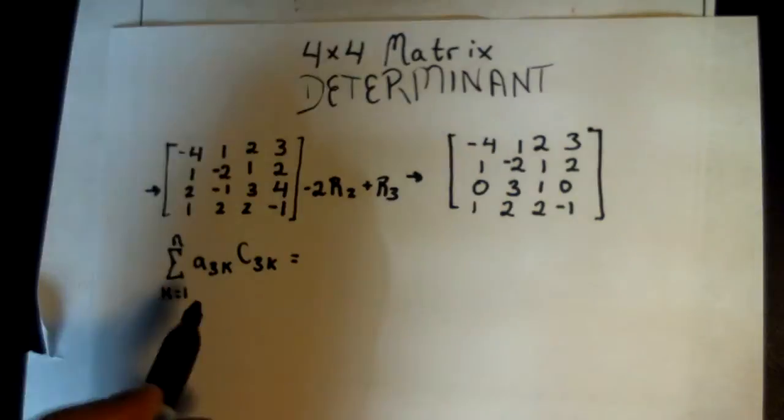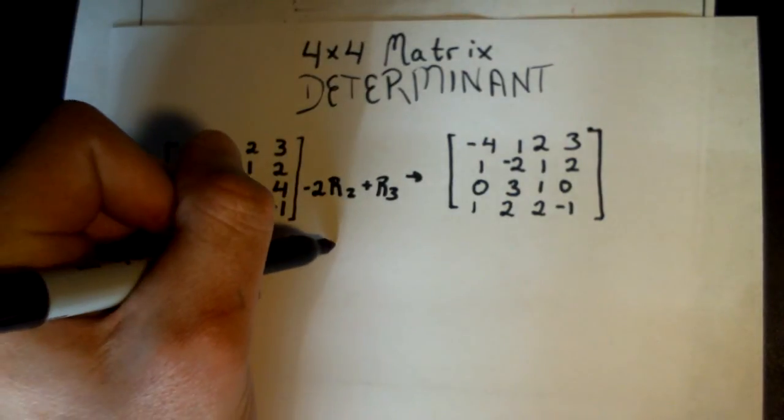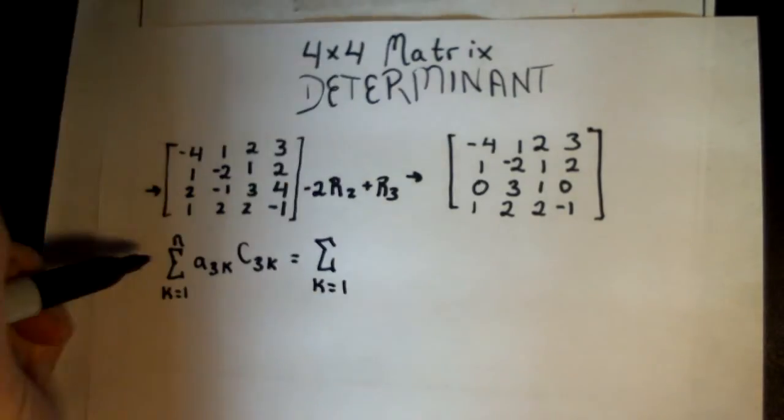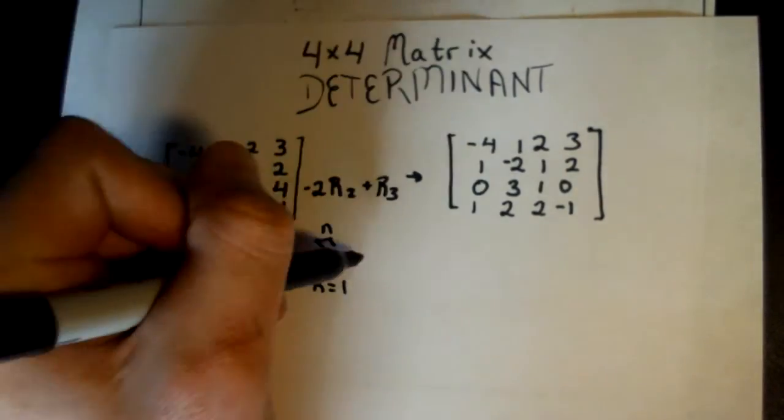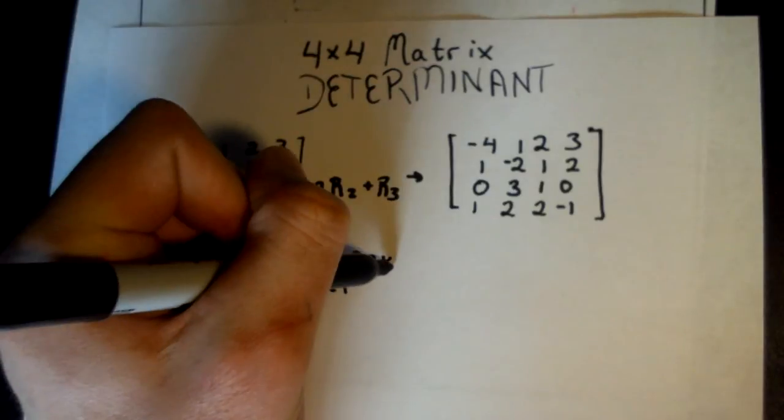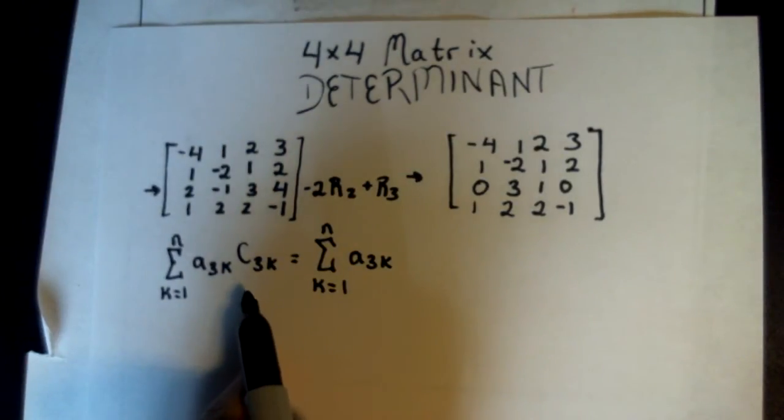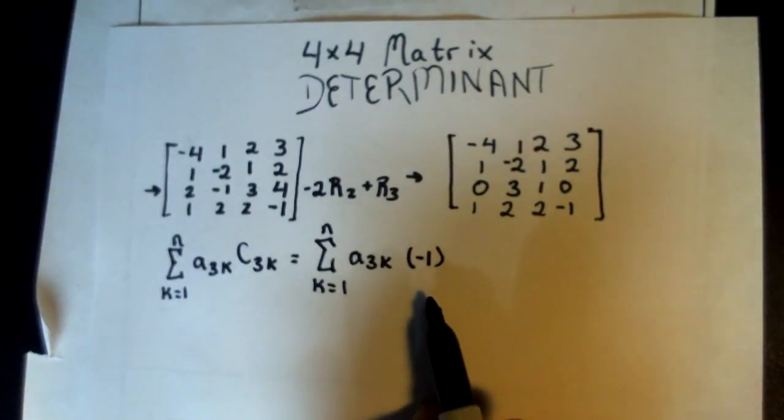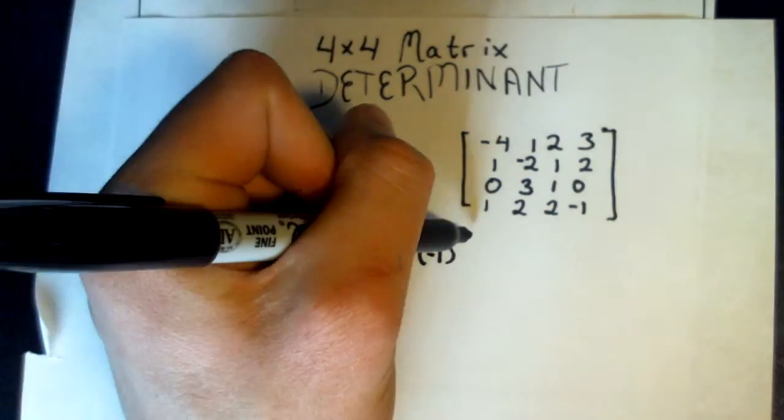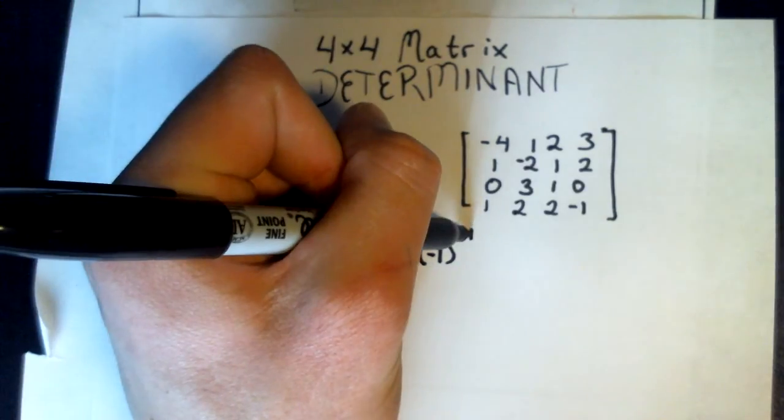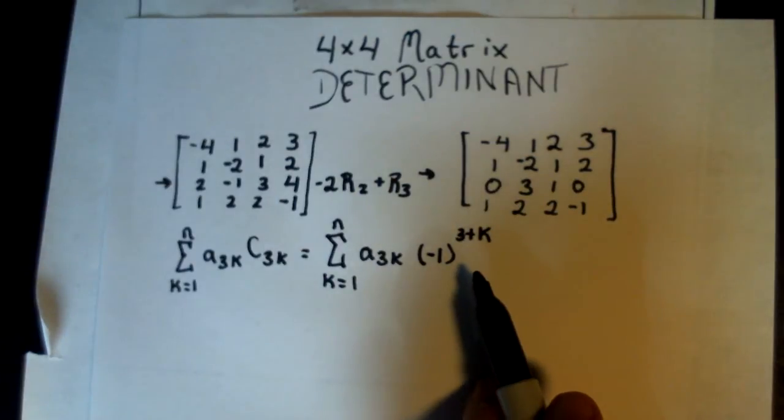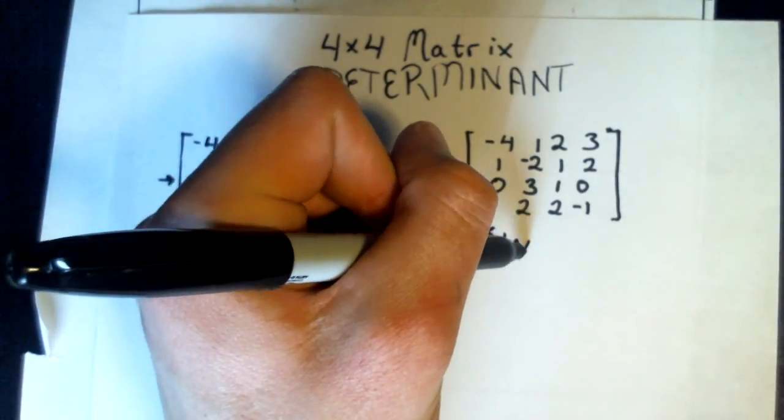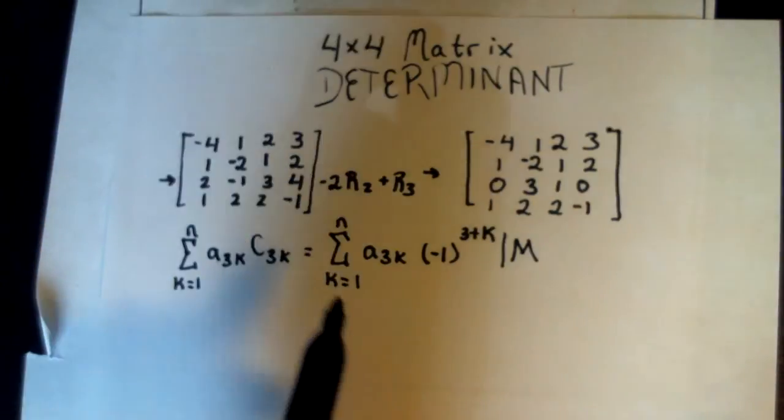So we know that this is going to be equal to, let's start with this first one, or let me actually make this equal to the sum, just so it doesn't look like I'm doing all this in my head. k equals 1 to n of a3k, and now the cofactor will be negative 1, it's always going to be 3 plus k, because the actual definition is i plus j.